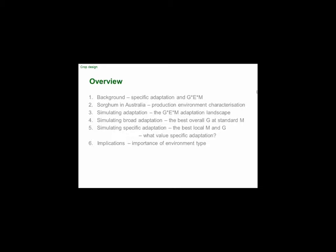Sorghum in Australia very quickly, because most of you will be familiar with that. I want to cover the notion of production environment characterisation — that will be a thread through here that I hope you'll see is very important — and then the notion of simulating adaptation: looking at what you might do with different genetics, environments and management. Then broad adaptation, where a plant breeding company might be trying to find the best genotype across all of this given some standard management.